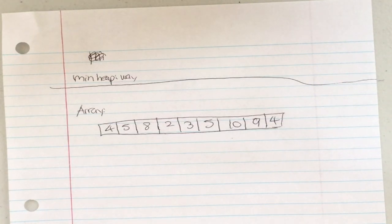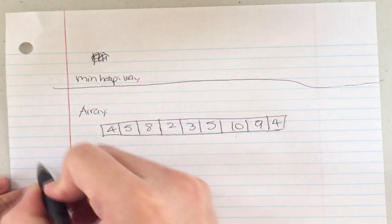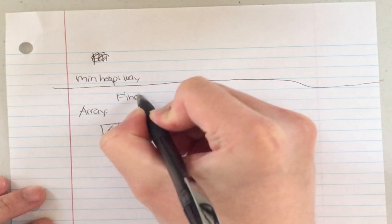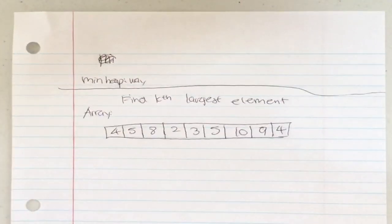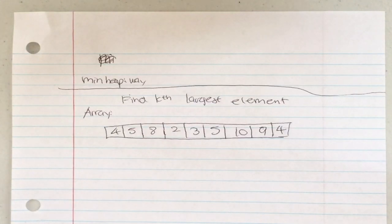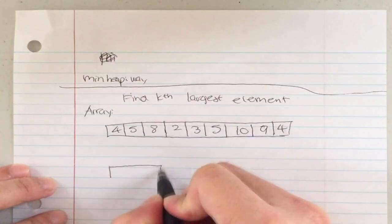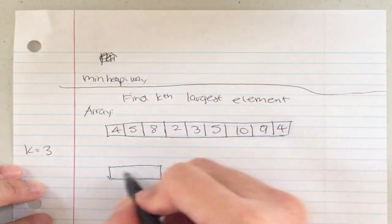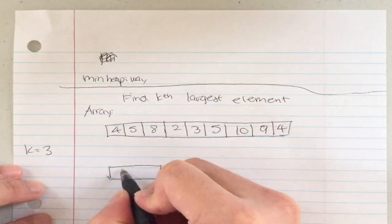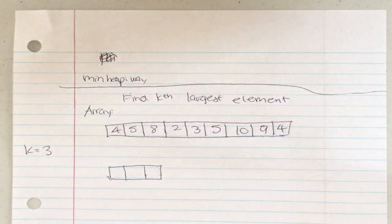Here's how you use a min heap. You build a min heap of size k. So if k equals three and I want to find the third largest element, I maintain a min heap with exactly three elements.